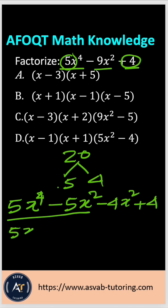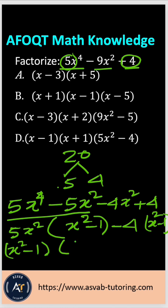That gives you 5x squared times x squared minus 1 minus. If you take 4 common here, that gives you x squared minus 1. So now you have x squared minus 1 times 5x squared minus 4.